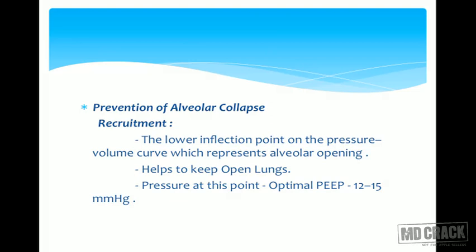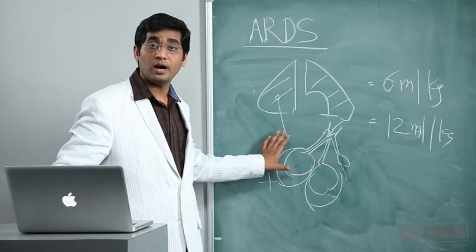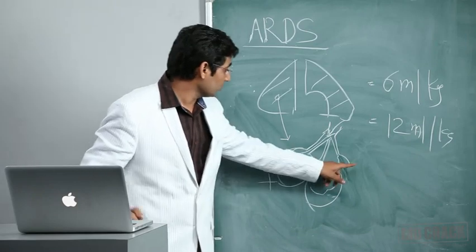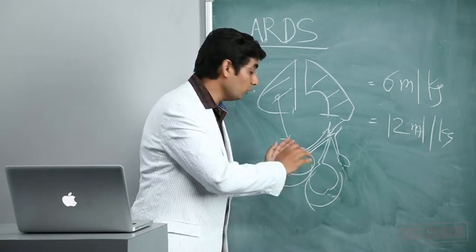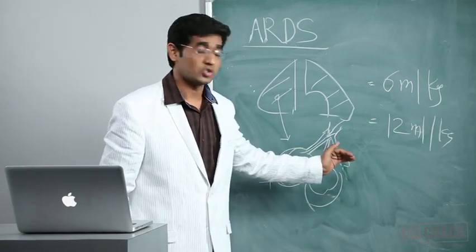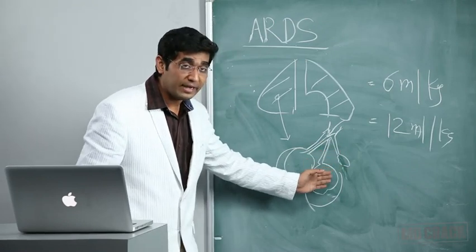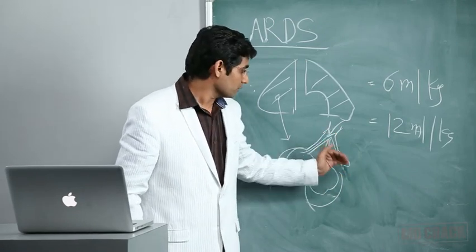Coming to next important issue - prevention of alveolar collapse through recruitment. Recruitment is basically the lower inflation point on pressure-volume curve which represents alveolar opening and helps keep lungs open. This indicates optimal PEEP of 12-15 mmHg. Going to the board again - this is collapsed alveoli. If we can open this collapsed alveoli, it will be much better for oxygenation.